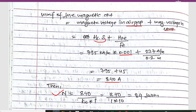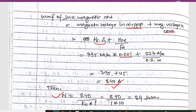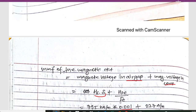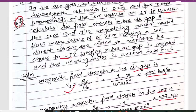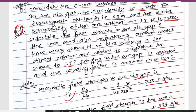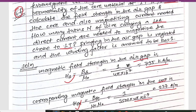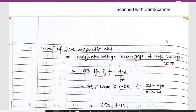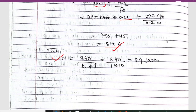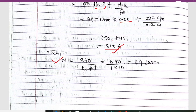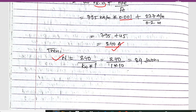To find the number of turns N, we use N = MMF / (kw · I). The MMF is 840 A, kw = 1, and the current I = 10 amperes. Substituting these values, we get N = 840 / (1 × 10) = 84 turns.